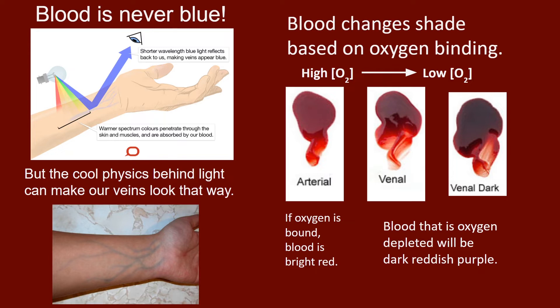Have you ever heard that blood is blue when it's deoxygenated and travels through our veins? This is false — our blood is never really blue. We often depict vascular structures carrying deoxygenated blood as blue in diagrams to distinguish where blood is going. The myth also stems from the fact that veins have a bluish color, but this is actually light being refracted through different tissues. Blood does come in different shades of red: oxygenated blood in arteries tends to be brighter red, while deoxygenated blood in veins looks darker.